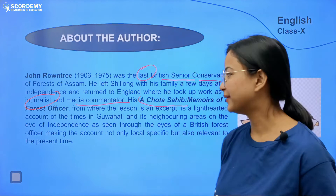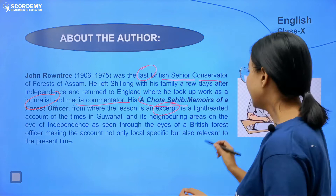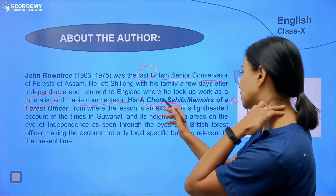The lesson is an excerpt from the book Chota Saheb, Memoirs of a Forest Officer. Excerpt means a small portion or a small part. So we are reading only a small extract from the bigger book Chota Saheb.